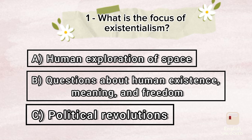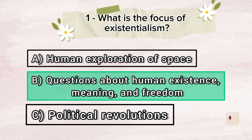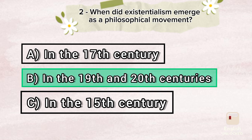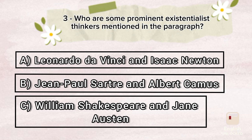Choose the correct answers. What is the focus of existentialism? A. Human exploration of space. B. Questions about human existence, meaning, and freedom. C. Political revolutions. When did existentialism emerge as a philosophical movement? A. In the 17th century. B. In the 19th and 20th centuries. C. In the 15th century. Who are some prominent existentialist thinkers mentioned in the paragraph? A. Leonardo da Vinci and Isaac Newton. B. Jean-Paul Sartre and Albert Camus. C. William Shakespeare and Jane Austen.